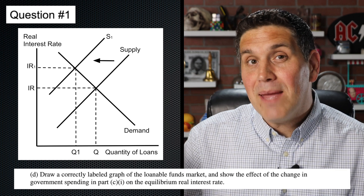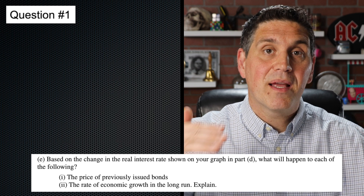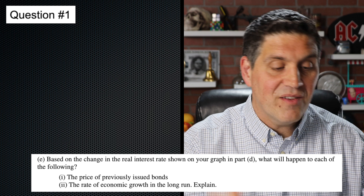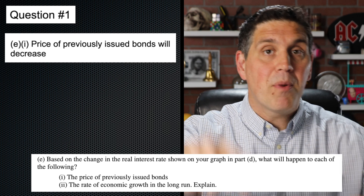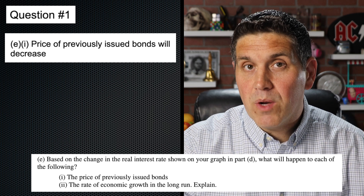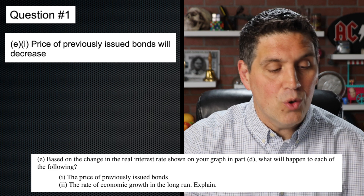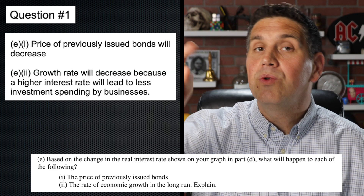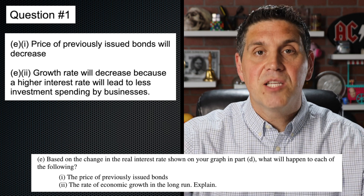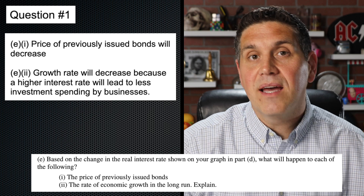In E, it says if there's a higher interest rate because of what you showed on the loanable funds market in D, what's going to happen to the price of previously issued bonds? The answer is go down. Remember, bond prices and interest rates are inversely related. No explanation required — all you had to say was bond prices go down. Now here in E2, the rate of economic growth in the long run is going to decrease because higher interest rates lead to less investment and less business spending on capital goods, and there's less capital accumulation. That's the idea of crowding out.